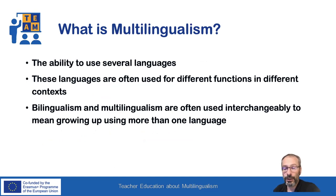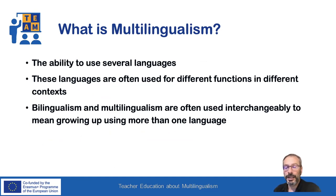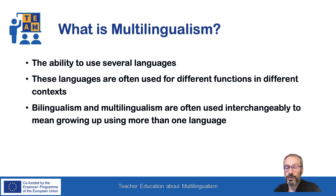The term multilingualism describes the ability to use several languages, often for different functions in different contexts. Bilingualism and multilingualism are often used interchangeably to mean growing up using more than one language.